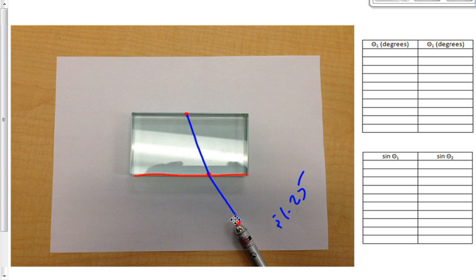And then take a protractor, which I'll give you if you don't have one yourself, and draw a line right here, perpendicular to the boundary between the air and the glass. What is that line that I've just drawn called? It's called the normal line, right?